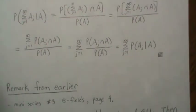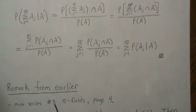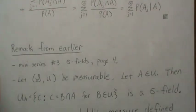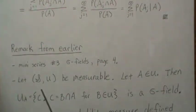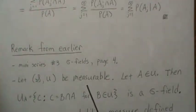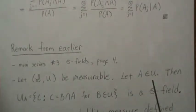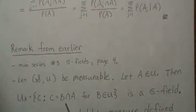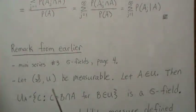Here's a remark from earlier in the mini-series — number three on sigma fields — where I talked about the sigma field U_A. If we let (S, U) be a measurable space and the event A is in the sigma field, then we define a new class U_A as all sets in the sigma field intersected with A. This class is itself a sigma field.